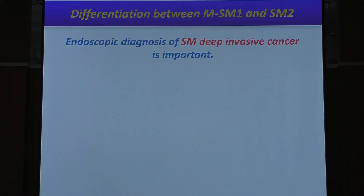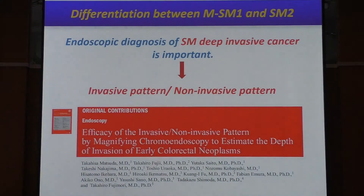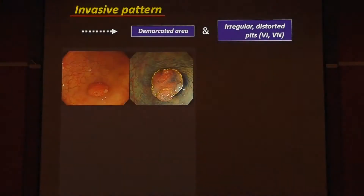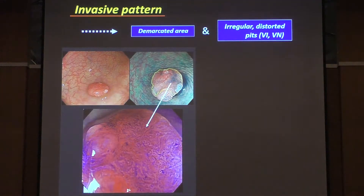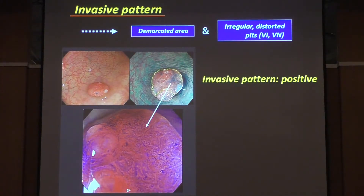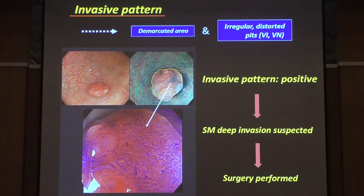In order to differentiate the diagnosis of SM-invasive cancer, the finding of the invasive pattern, proposed by Professor Matsuda, is very useful. The invasive pattern is defined by the existence of a demarcated area and inside area. You need to focus on the area around the demarcated region — if you see severely irregular pits inside, you can confidently diagnose this lesion as positive for invasive pattern and SM-invasive cancer, and refer the patient directly to surgery.